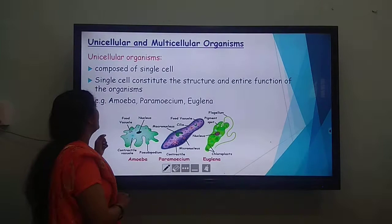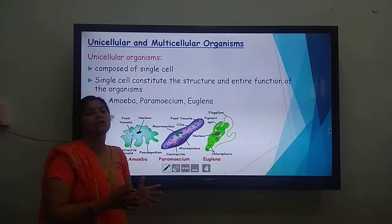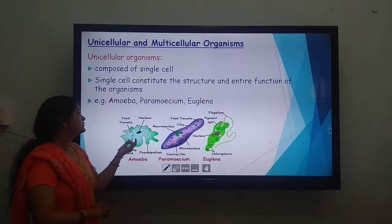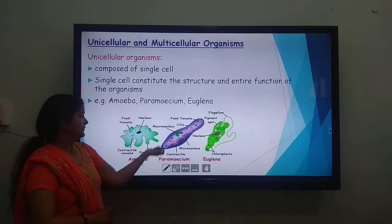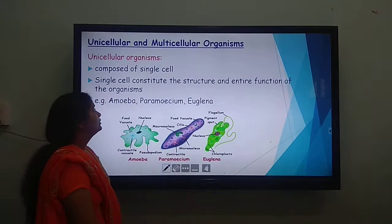In a unicellular organism, respiration, nutrition, and movement are all done by that single cell — all functions of the organism are performed by a single cell. Examples include amoeba, paramecium, and euglena — all protists or protozoa. Paramecium is a slipper-shaped organism having cilia which help in movement, and euglena has a flagellum for movement.